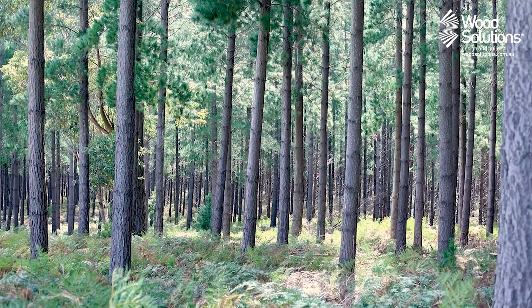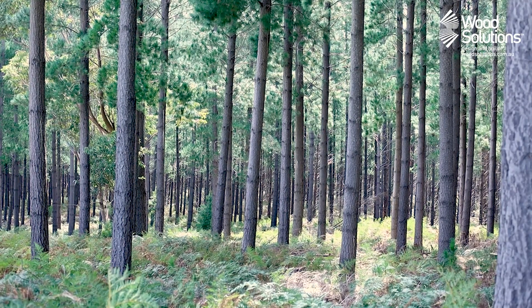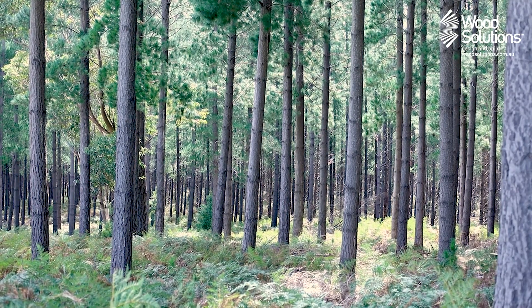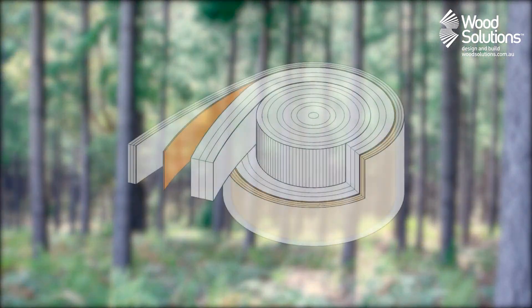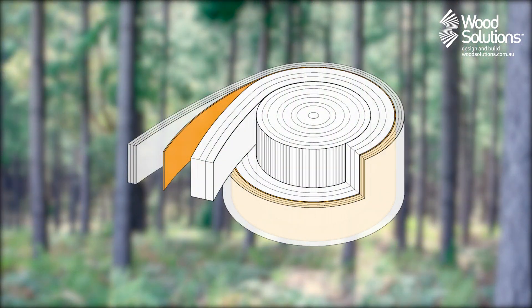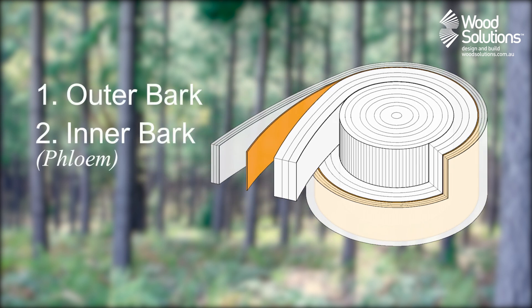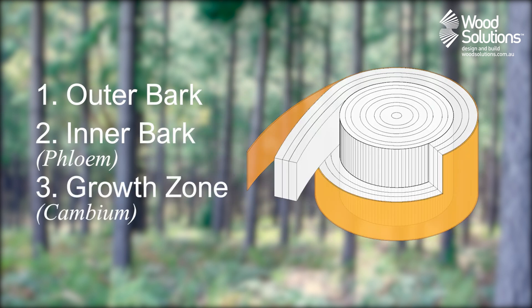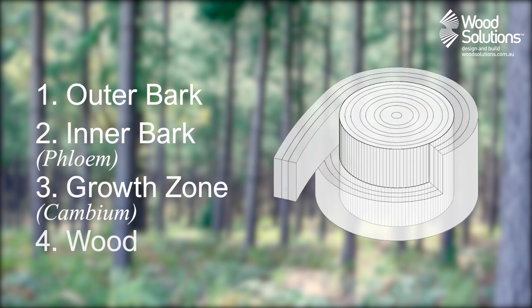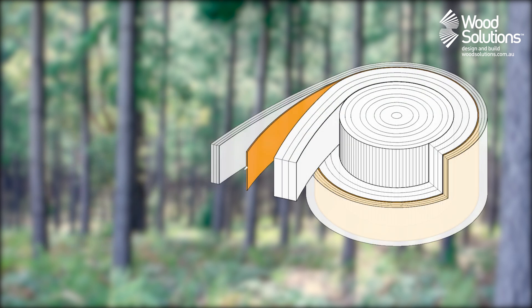The process by which trees grow thicker is similar, although it occurs in a different location. A tree trunk is made up of four main layers: the outer bark, the inner bark, the growth zone — also known as the cambium — and the wood. New wood is added to the trunk of the tree in the cambium, located between the inner bark and the wood.